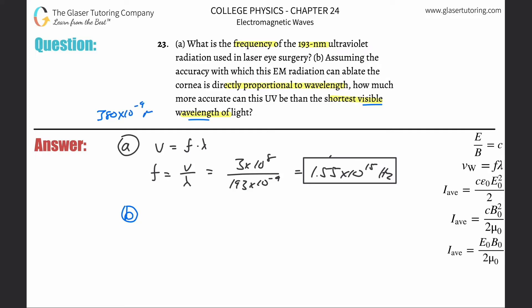They're just saying that it's directly proportional to this. So how much more accurate depends on how we want to give it: do we want to give it a percentage, or how many more times accurate it is? Basically, what I'm going to do is take my 380 times 10 to the minus ninth and divide it by the smaller wavelength, 193 times 10 to the minus ninth.